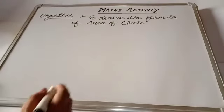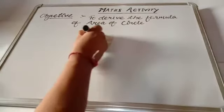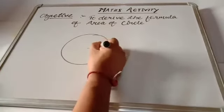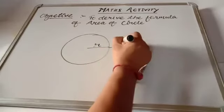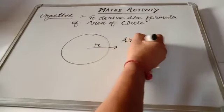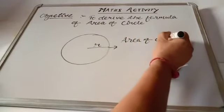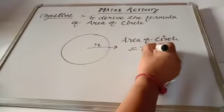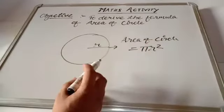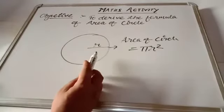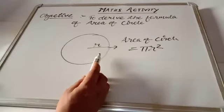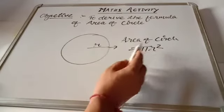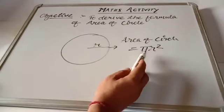Now, students, you know that if we have a circle of radius r, then the area of the circle is equal to πr². With the help of the paper cutting method, we will derive the formula of area of a circle, that is equal to πr².